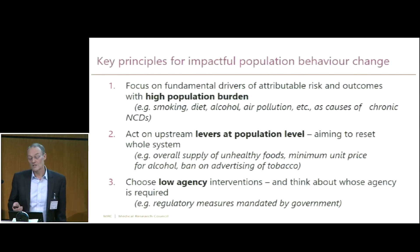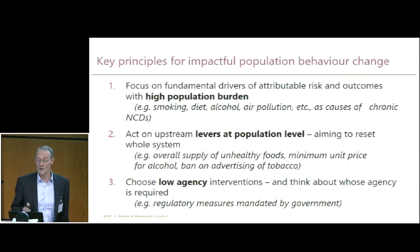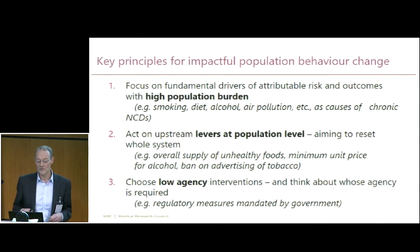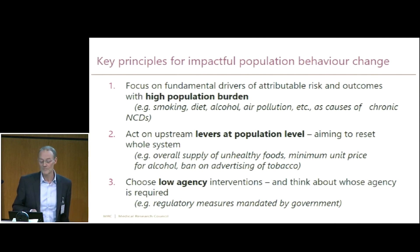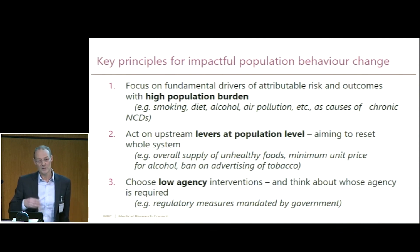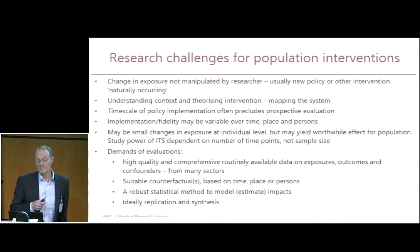Just some key principles for impactful population behaviour change: focus on things that are important, where there is a high population burden of disease. Act on upstream levers at a population level, aiming to reset the system — for example, changing the overall supply of healthy food. Choose low-agency interventions — things that people don't have to think about. And there is a list of further research challenges. Thank you very much.